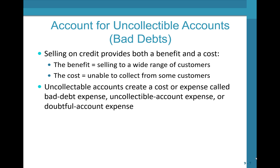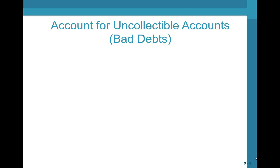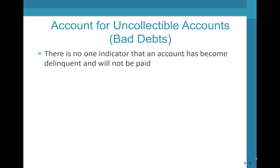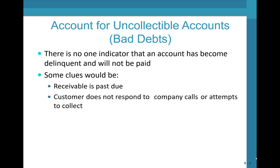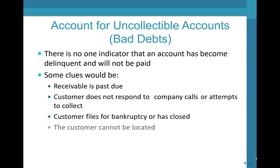Bad debt expense also has other names — you might hear it called uncollectable account expense or doubtful account expense — but remember: bad debt expense. It is an operating expense. There is no single indicator that an account has become delinquent, but clues include: the receivable is past due; the customer does not respond to collection attempts; the company has filed for bankruptcy or closed; or the customer cannot be located.